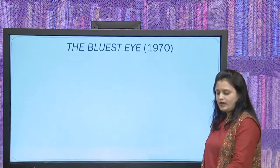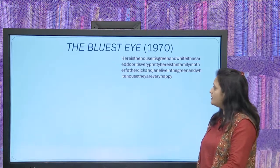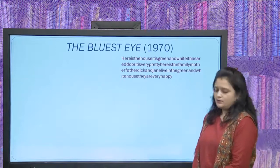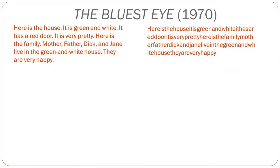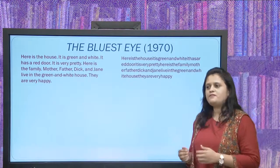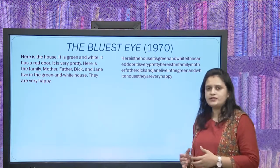The novel opens with a primer used in American schools. I will read it: 'Here is the house. It is green and white. It has a red door. It is very pretty. Here is the family — mother, father, Dick and Jane live in the green and white house. They are very happy.' This is a primer used to teach young nursery children language for the first time — the Indian equivalent would be nursery rhymes.